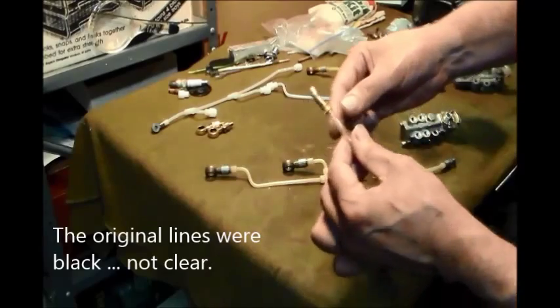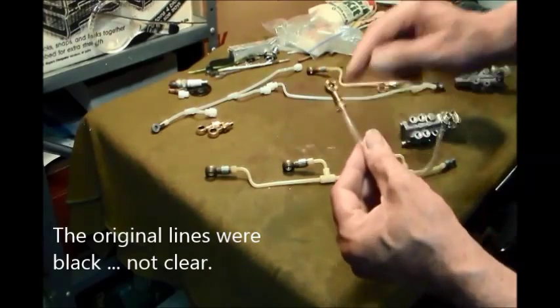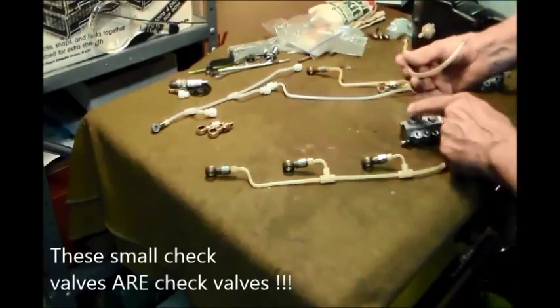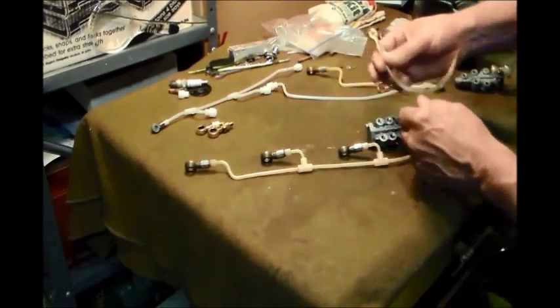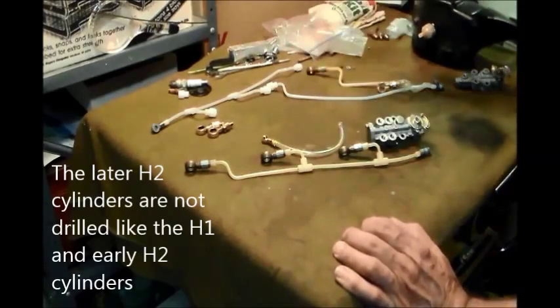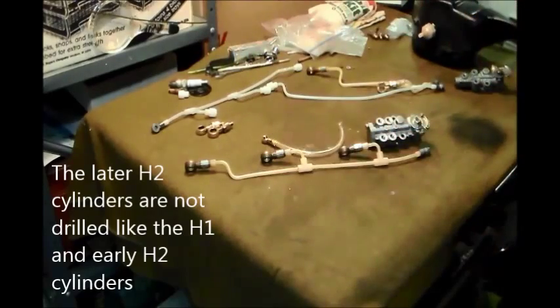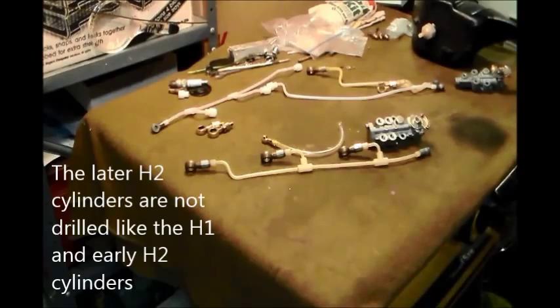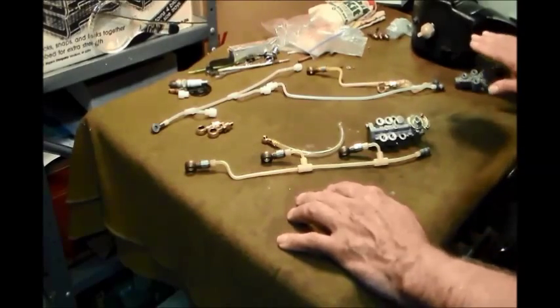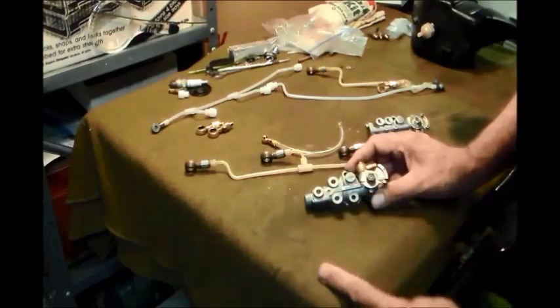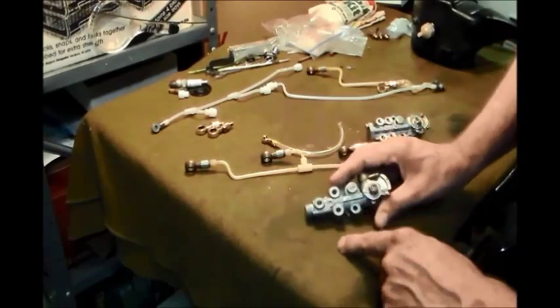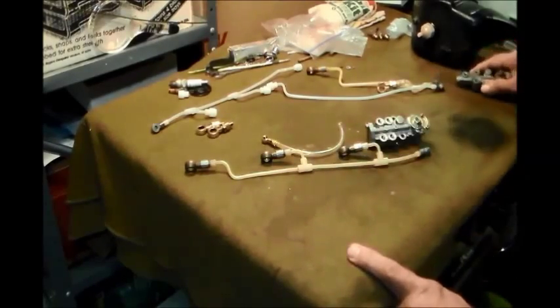Then they took this smaller check valve - same operation, there's a spring and a ball - and mounted those into the carburetors one, two, three, taking up the other three holes. Basically what they did is they took that drilled system through the cylinder itself that they had on all the other bikes and moved it outside. Those are your basic differences: three-hole pump on 250, 350, 400, 500, early 750; later 750s in '74, '75, and '76 had this four-hole.